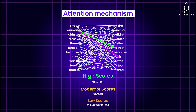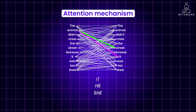This helps the model understand context and resolve ambiguities, accurately determining what pronouns like 'it,' 'he,' or 'she' refer to, and capturing how words far apart in a sentence can relate to each other. Note that this is a very simplified way to think about it. In reality, the transformer has multiple attention heads, each focusing on different aspects and relationships between words, and the score calculation uses complex mathematical functions for better results.